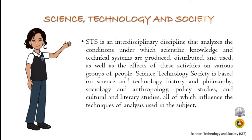Science, Technology and Society is an interdisciplinary discipline that analyzes the conditions under which scientific knowledge and technical systems are produced, distributed, and used, as well as the effects of these activities on various groups of people. It is based on science and technology history and philosophy, sociology and anthropology, policy studies, and cultural and literary studies, all of which influence the techniques of analysis used in the subject.